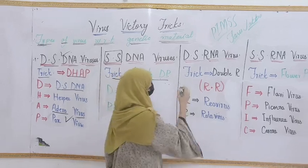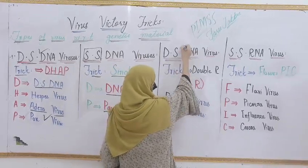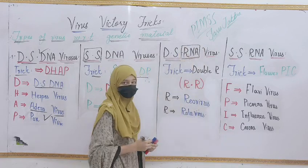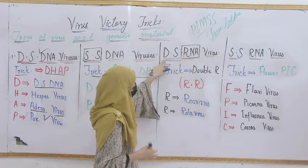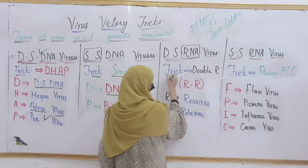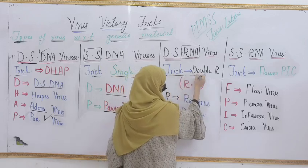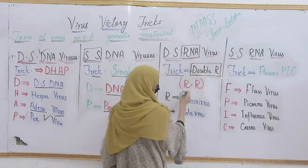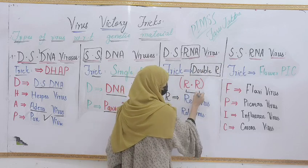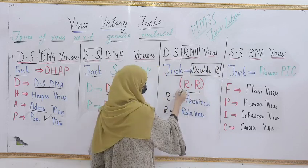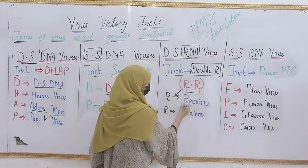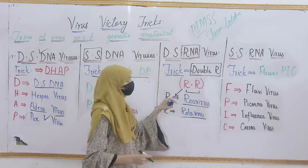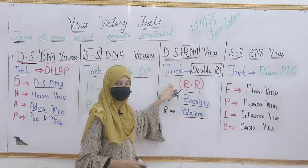The next one is DS RNA virus, where the genetic material is RNA. The trick to understand this type of virus is Double-R — we write the letter R two times: one R represents the Reovirus and the other R represents Rotavirus. That was also an amazing trick.